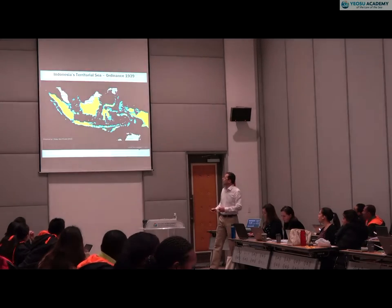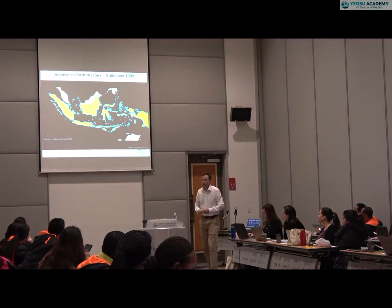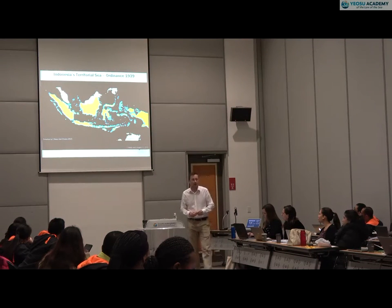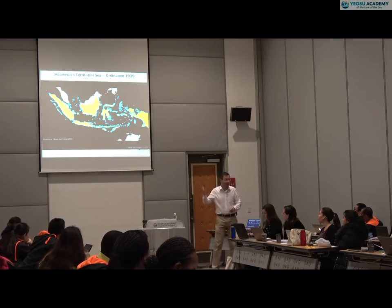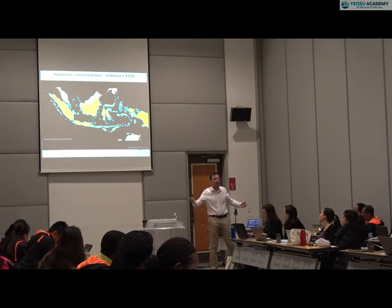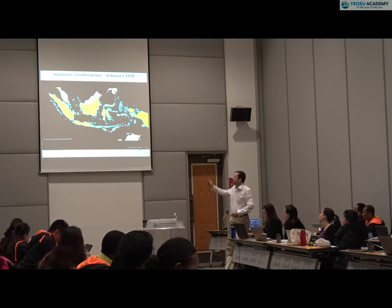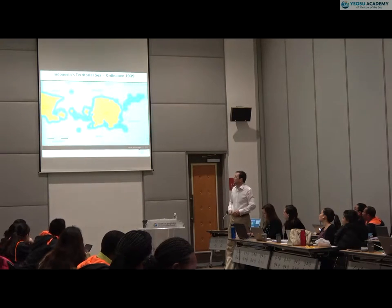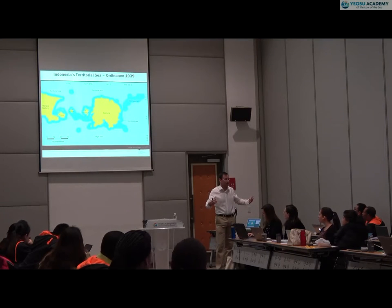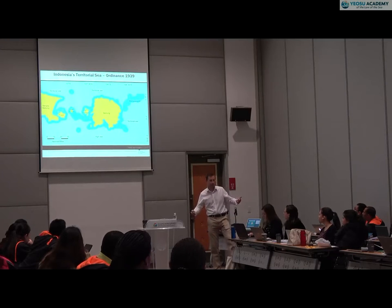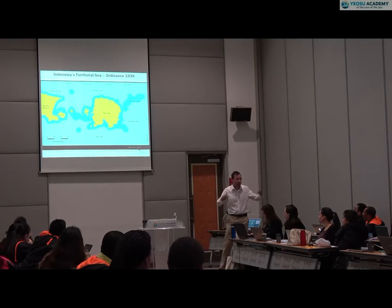Here we have the land territory and a three-mile zone, as was. The real problem from an Indonesian perspective is how the islands are dispersed and disconnected from one another. Looking at Sumatra, you have a situation of separation between the islands within the three-mile zone, and that was unsatisfactory — it meant that things were divided.